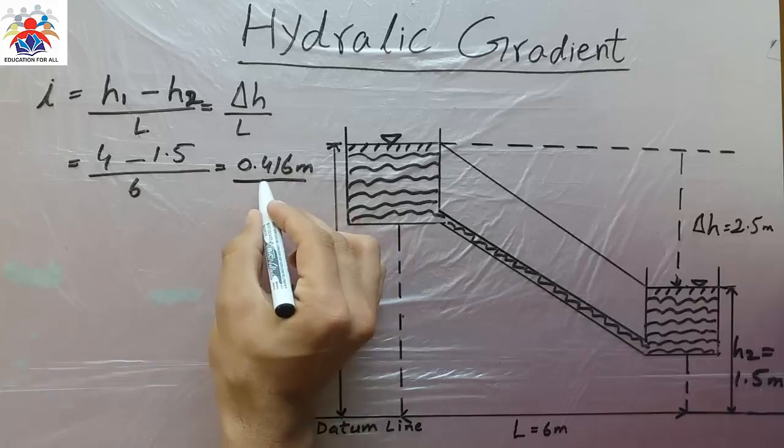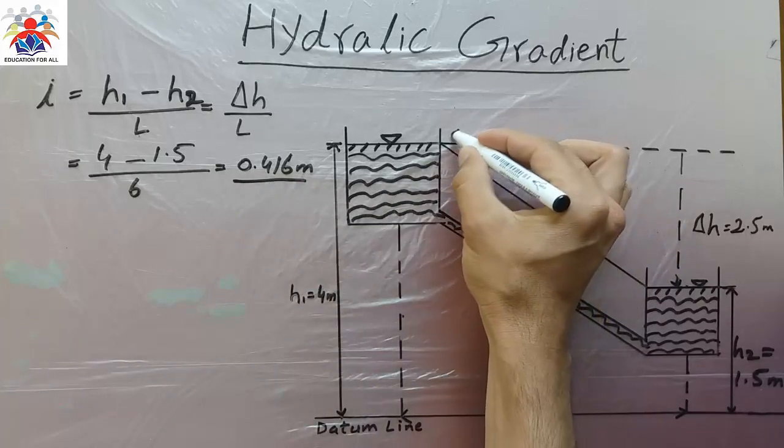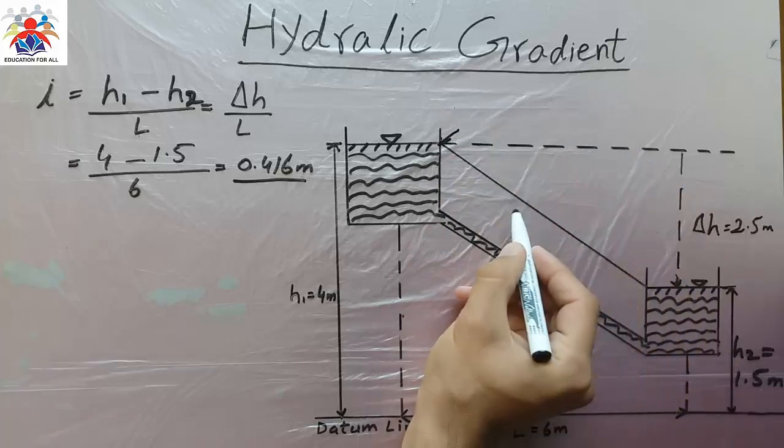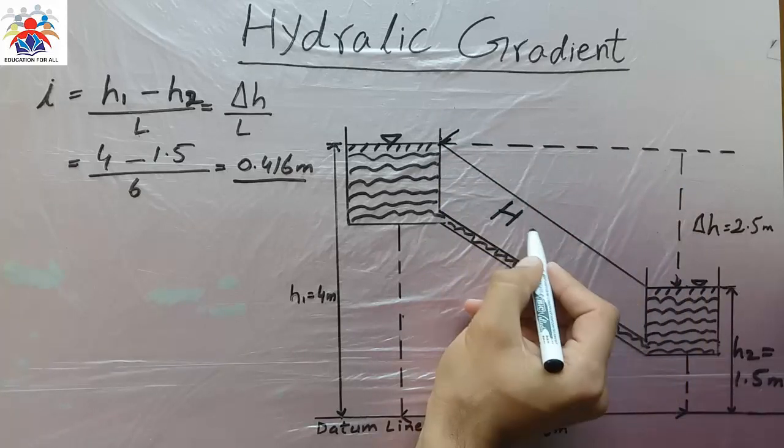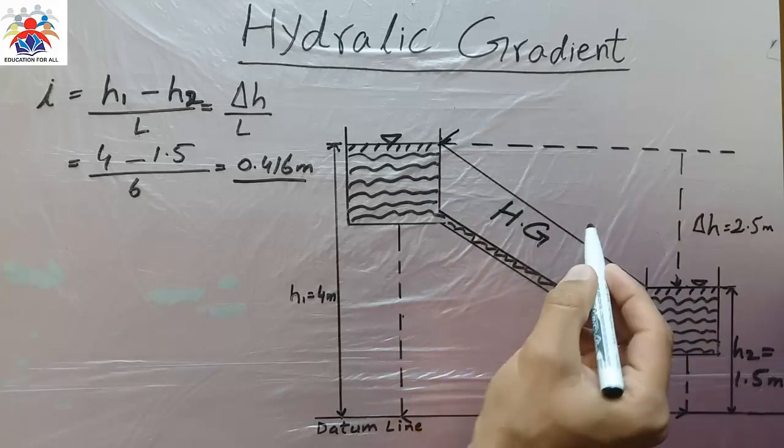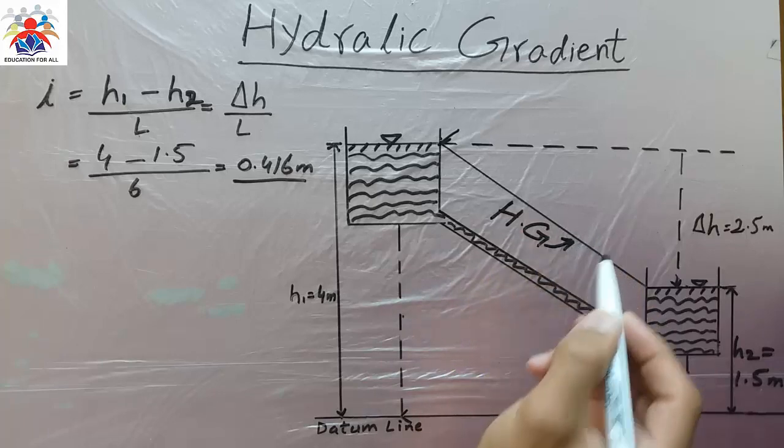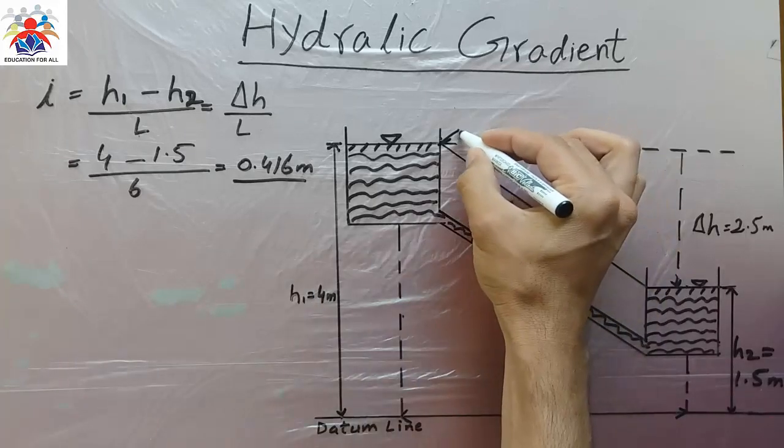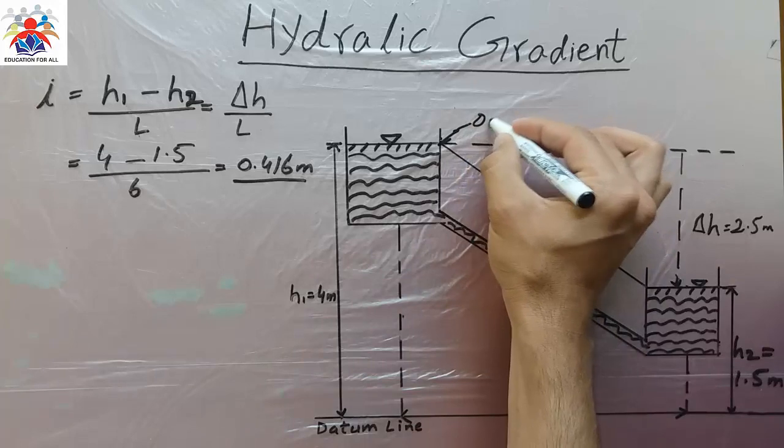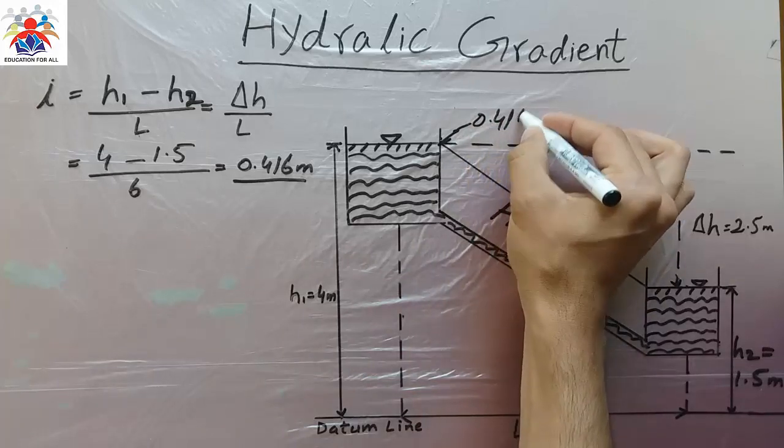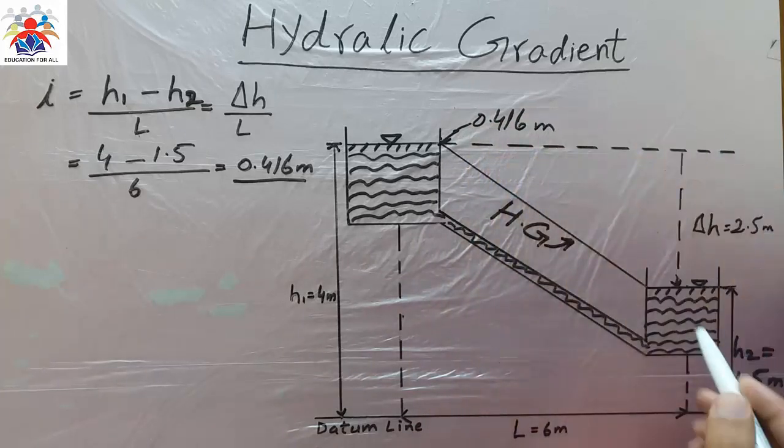This is our hydraulic gradient line. The first point we have 0.416 meter and once we get to the lowest elevation we will have 2.5 meter. That's how you calculate hydraulic gradient.